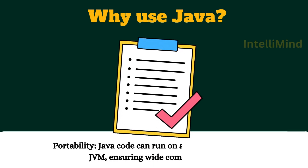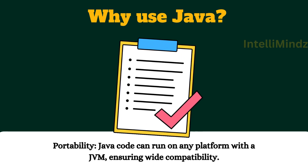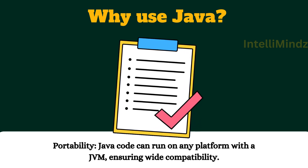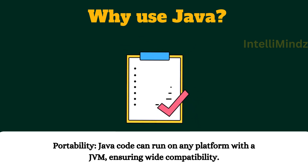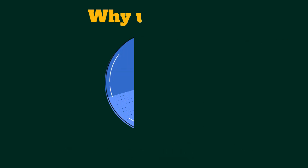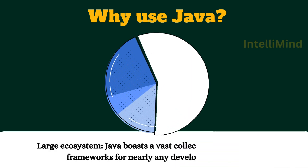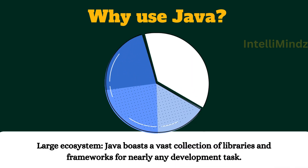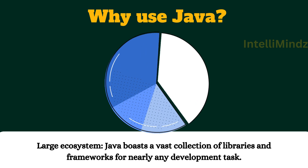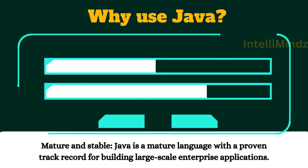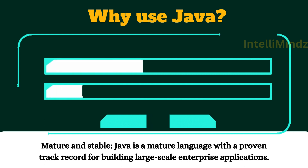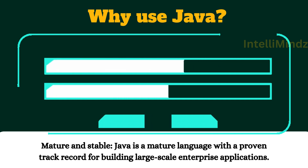Why use Java? First, Java code can run on any platform with a JVM, ensuring wide compatibility. Second, Java boasts a vast collection of libraries and frameworks for nearly any development task. Third, Java is a mature language with a proven track record for building large-scale enterprise applications.